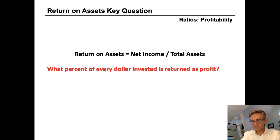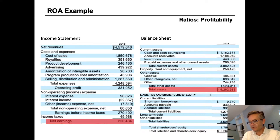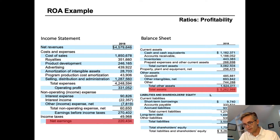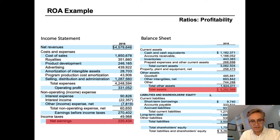Let's look at an example using Hasbro. For this ratio, we need to source the numerator from the income statement and the denominator from the balance sheet. Here are Hasbro's 2018 year-end income statement and balance sheet. We can see that net income — or net earnings as they listed — was $220 million.